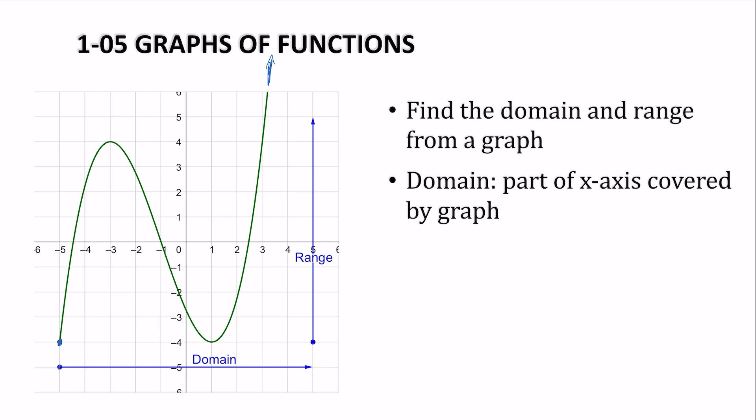Therefore, our domain of this graph starts at negative 5. It's a filled-in dot, so I know it's equal to, and goes through infinity. The range is the part of the y-axis. So the lowest this graph goes is negative 4 in the y, and it goes up above that, goes through infinity. So domain is the x, range is the y.